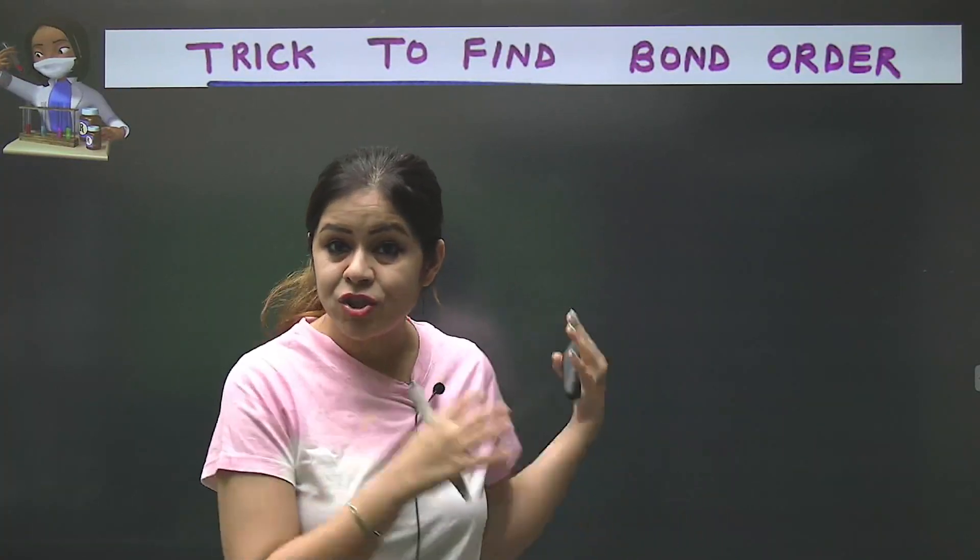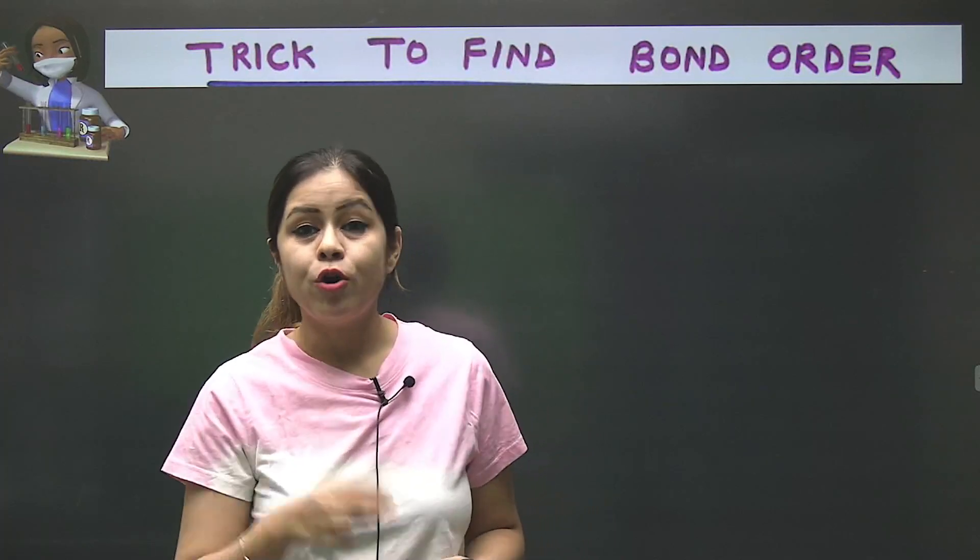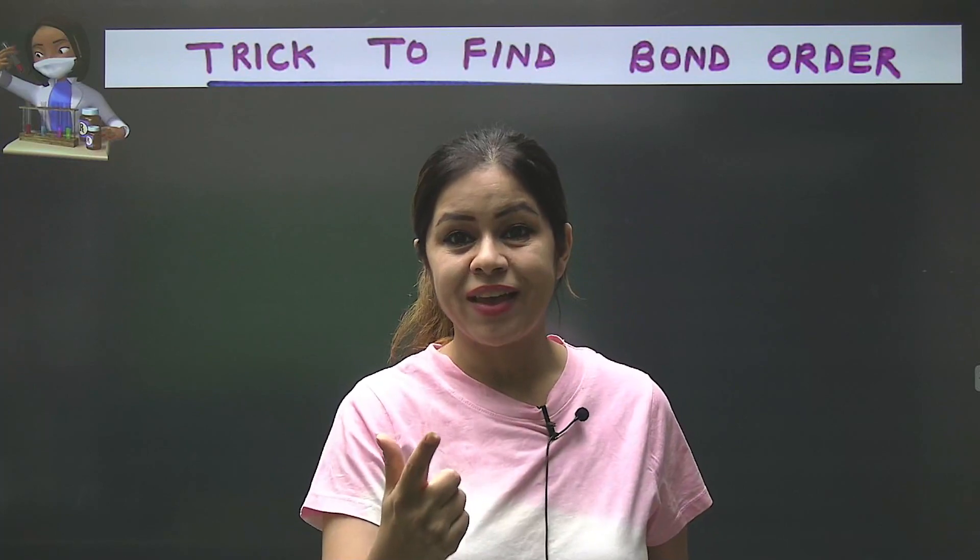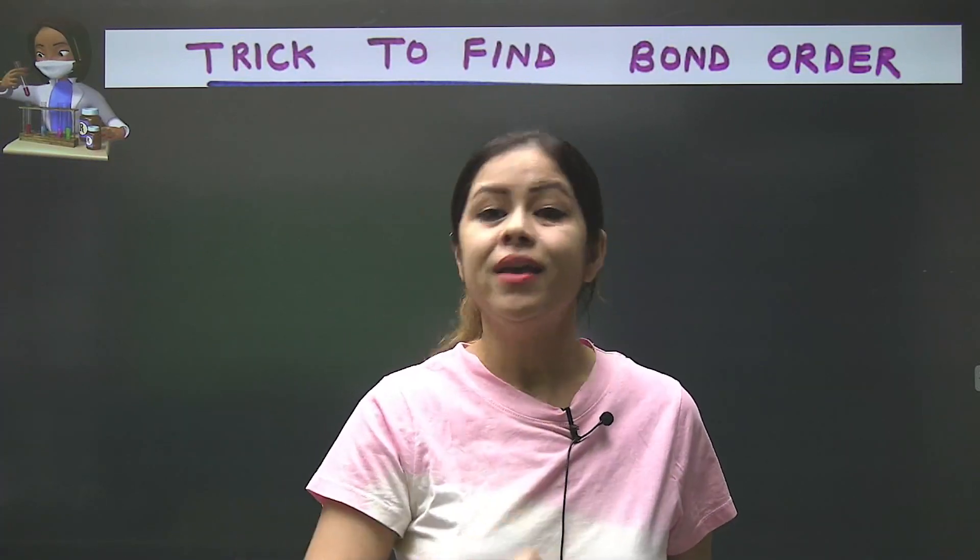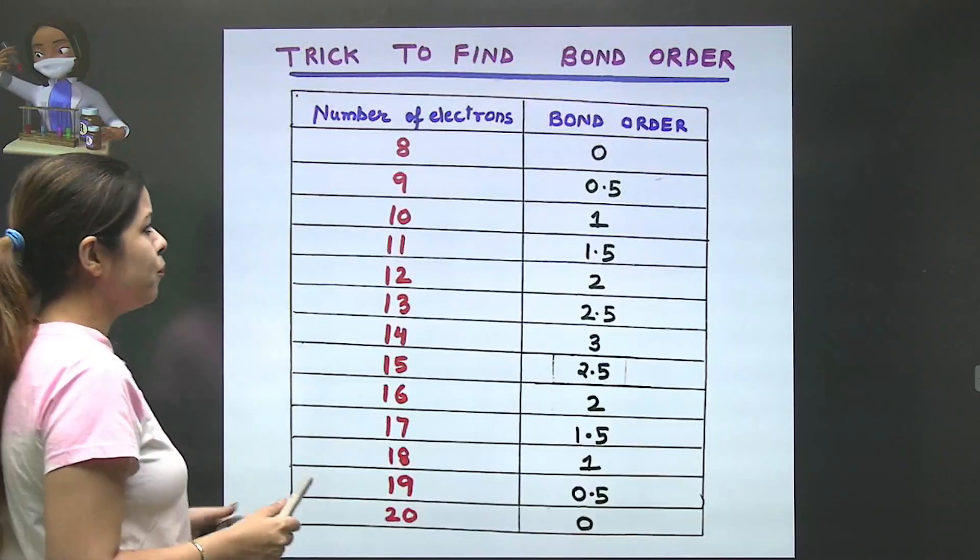So I am going to show you a very short trick in this video where you can find the bond order within a few seconds. I will take 4-5 minutes to explain it, but once you understand it, you can find the bond order within a few seconds. Let us see how. Look at this table.